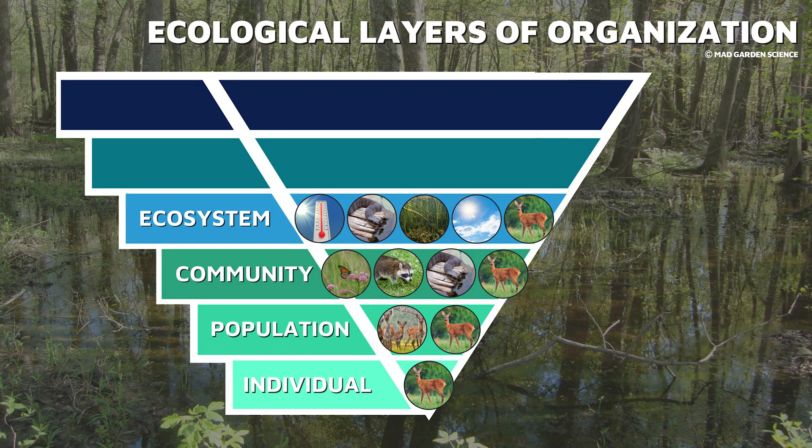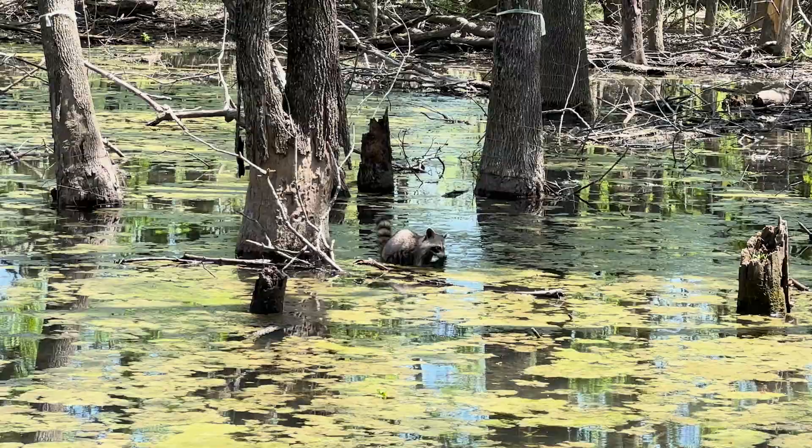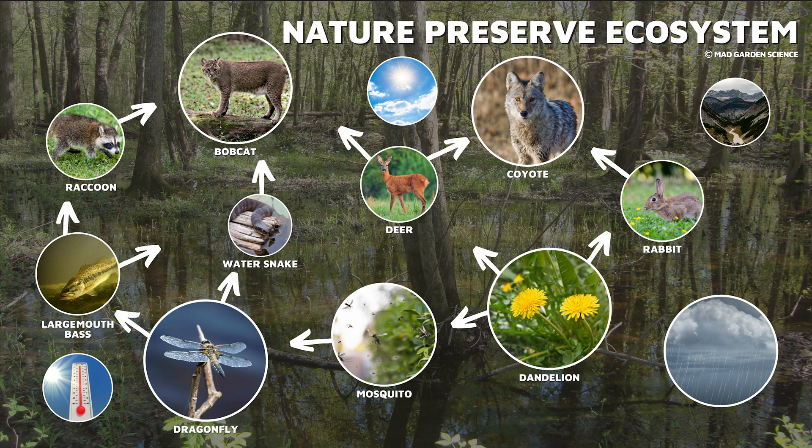The interactions between these communities and their physical landscape make up the ecosystem — our next layer. All these interactions in a population's environment regulate that population's numbers. Think about all of the abiotic, or non-living, elements, like the water clarity at the nearby pond, the topography, air and water temperature, and the precipitation level. The surrounding area's biotic and abiotic factors together form the deer's ecosystem.